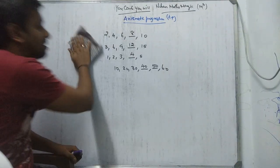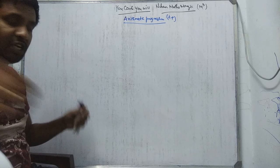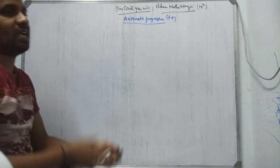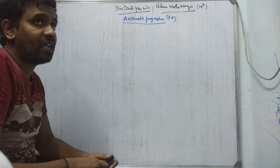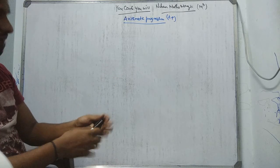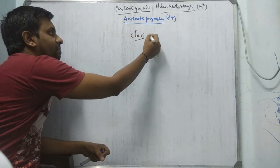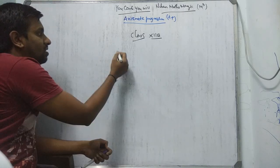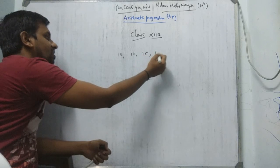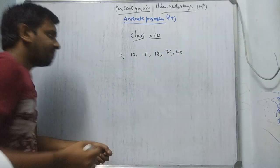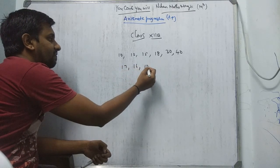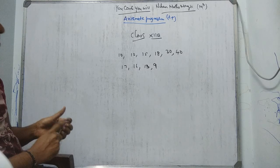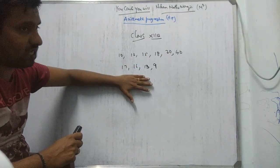Let me introduce the chapter with a small example. For example, I go to class 12B and ask the students how many of them got below 40 marks. There will be 10 students standing. I ask their marks — they say 10, 12, 15, 18, 13, 40, 17, 16, 13, 3, 69, and 9 marks. So below 40, they are standing. How many terms? Counting: 1, 2, 3, 4, 5, 6, 7 — 10 terms. Number of terms is 10.